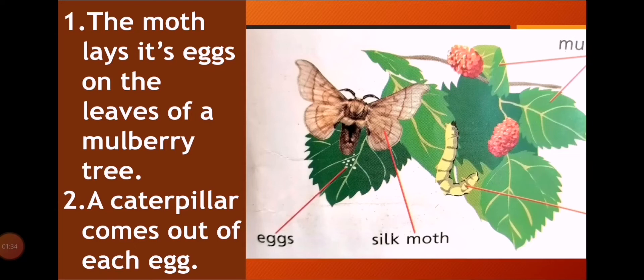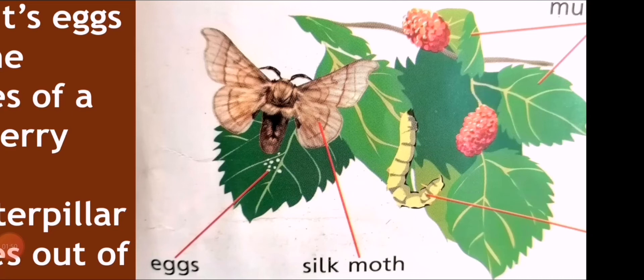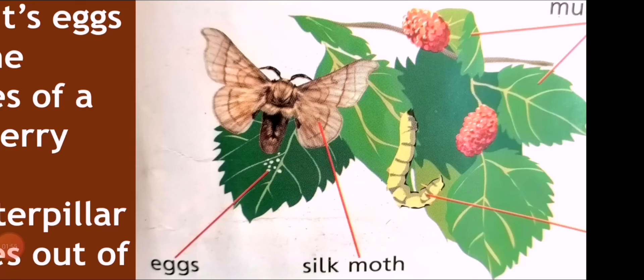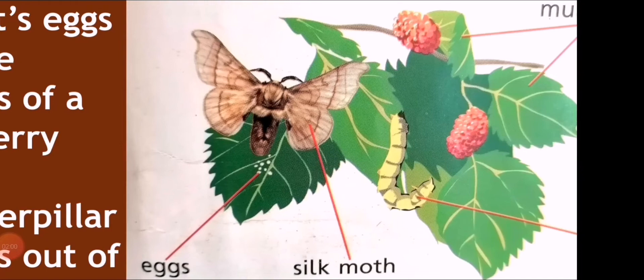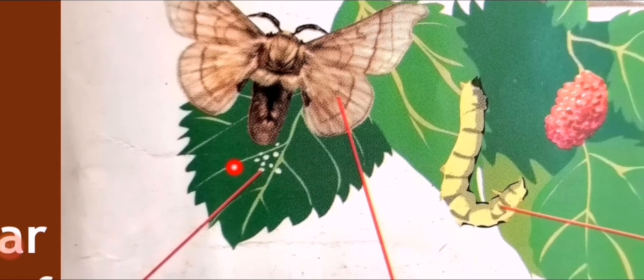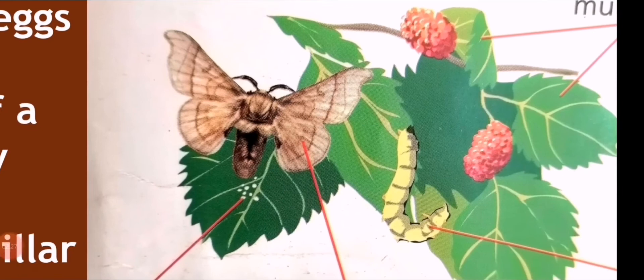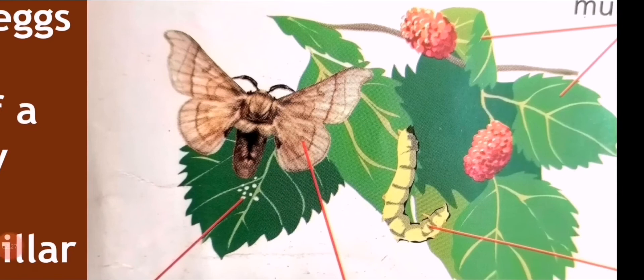The first step is that the moth lays its eggs on the leaves of a mulberry tree. This is a very special thing about this insect — it only lays its eggs on the mulberry tree, never on any other tree. Mulberry is found in large quantities in China because it is one of the most popular edible fruits there. As you can see in the picture, the moth lays its eggs on the large mulberry leaves.